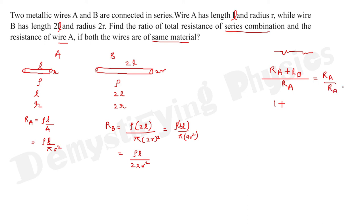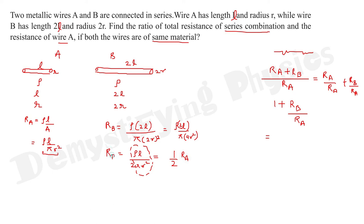The ratio (R_A + R_B) over R_A can be split as R_A/R_A plus R_B/R_A, which equals 1 plus R_B/R_A. Comparing the expressions, R_B is half of R_A, so R_B upon R_A is 1/2. Substituting, the answer is 1 plus 1/2, which equals 3/2.